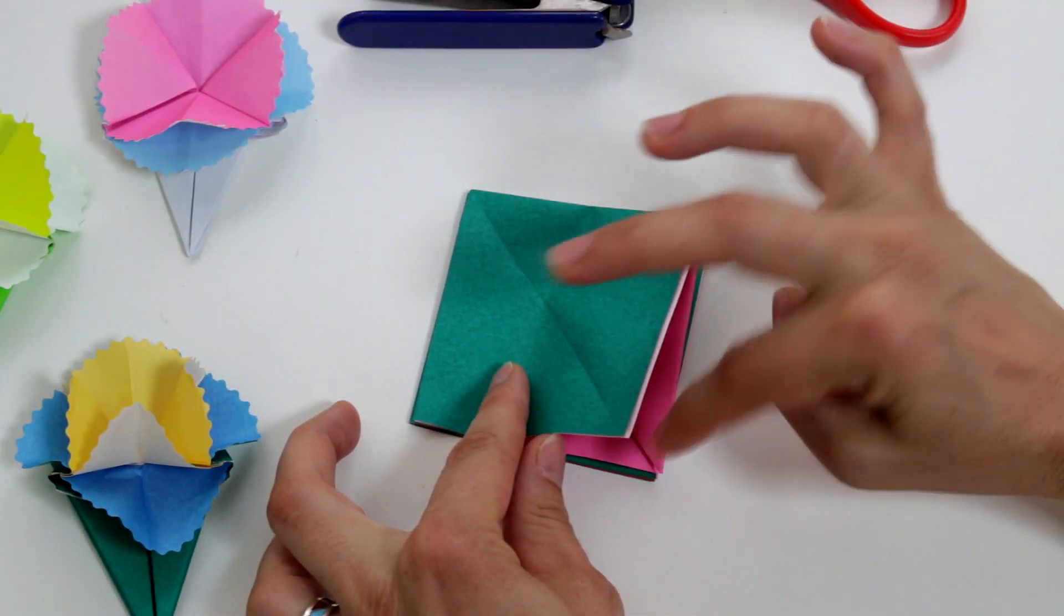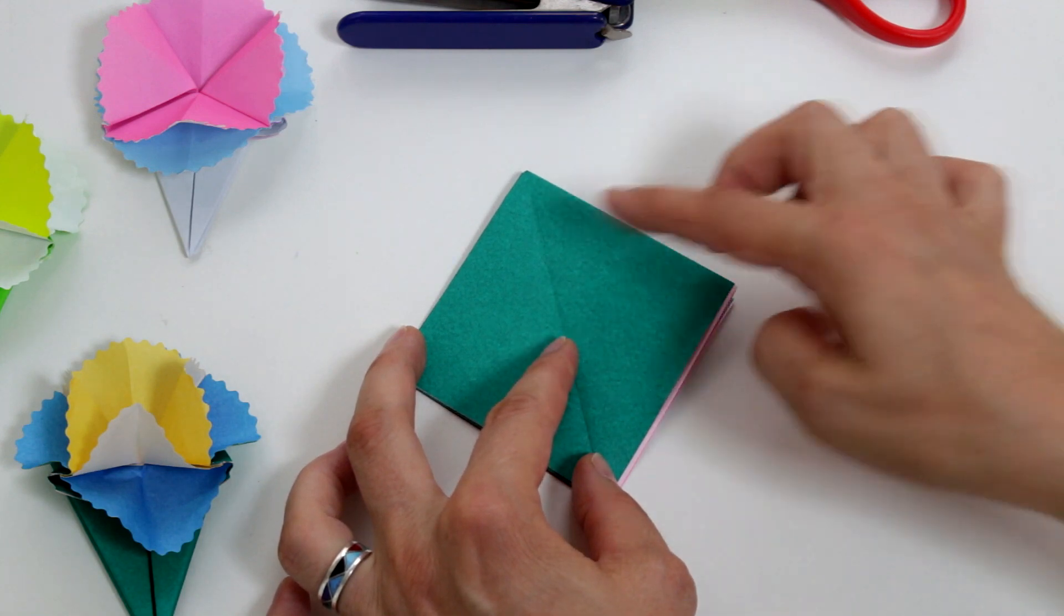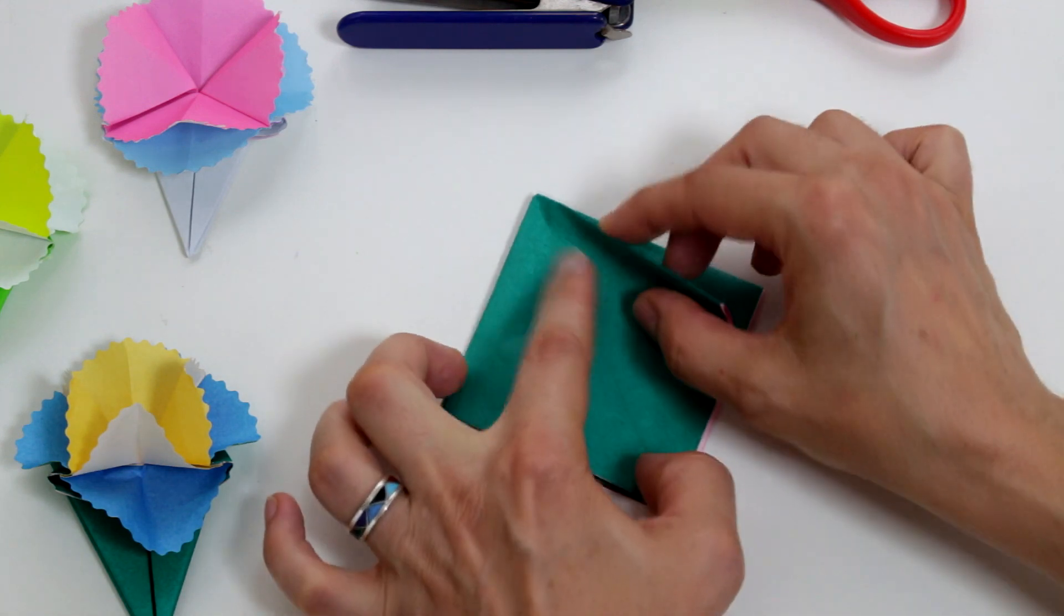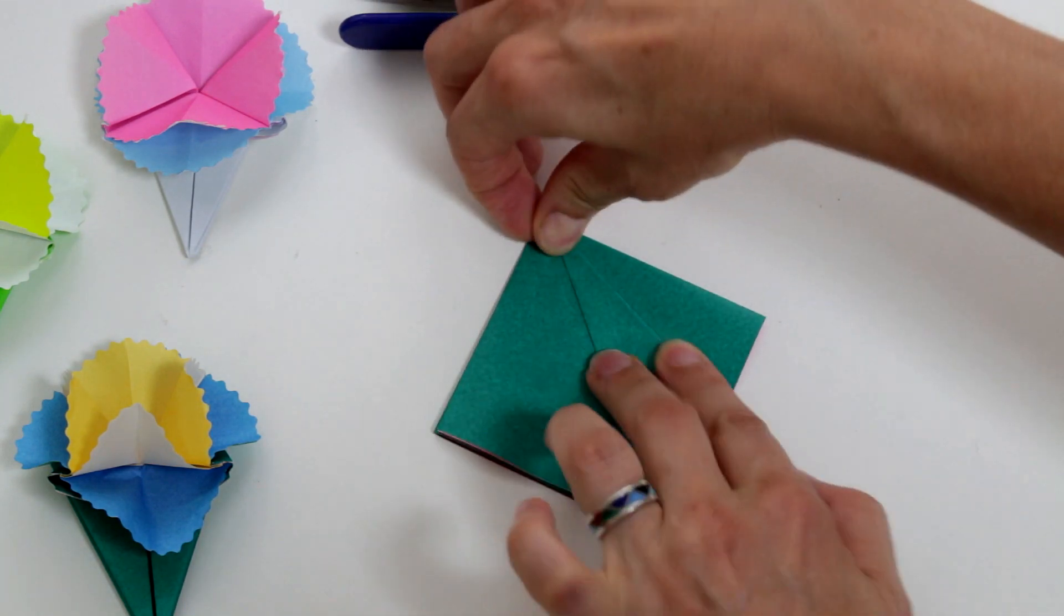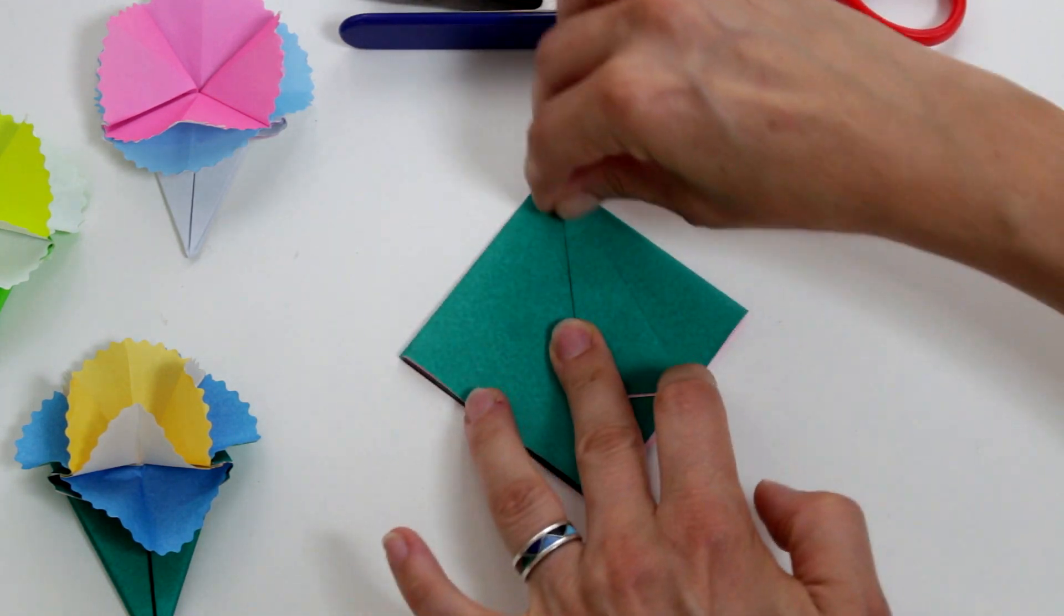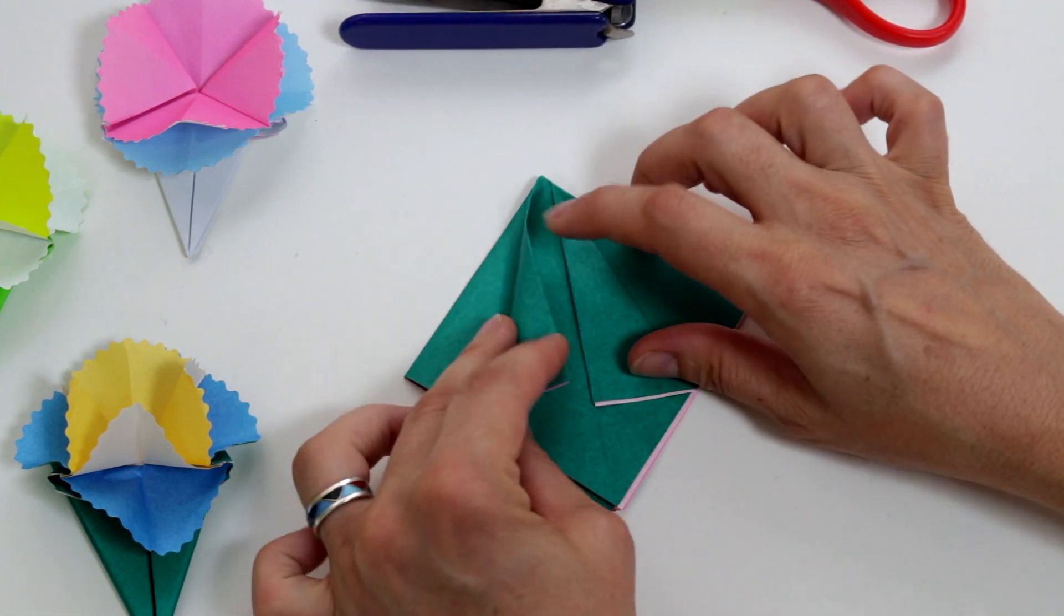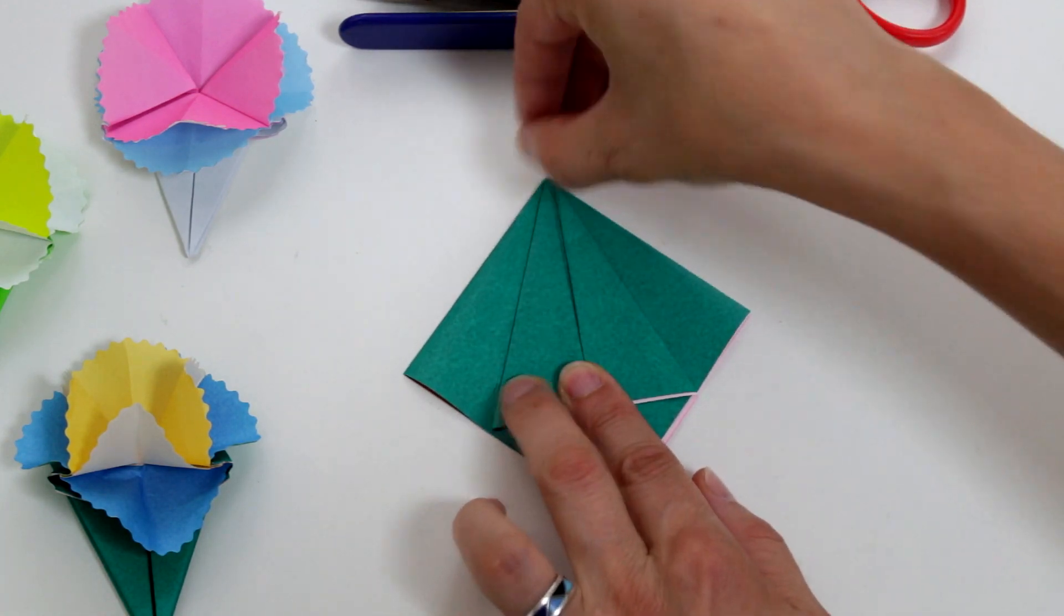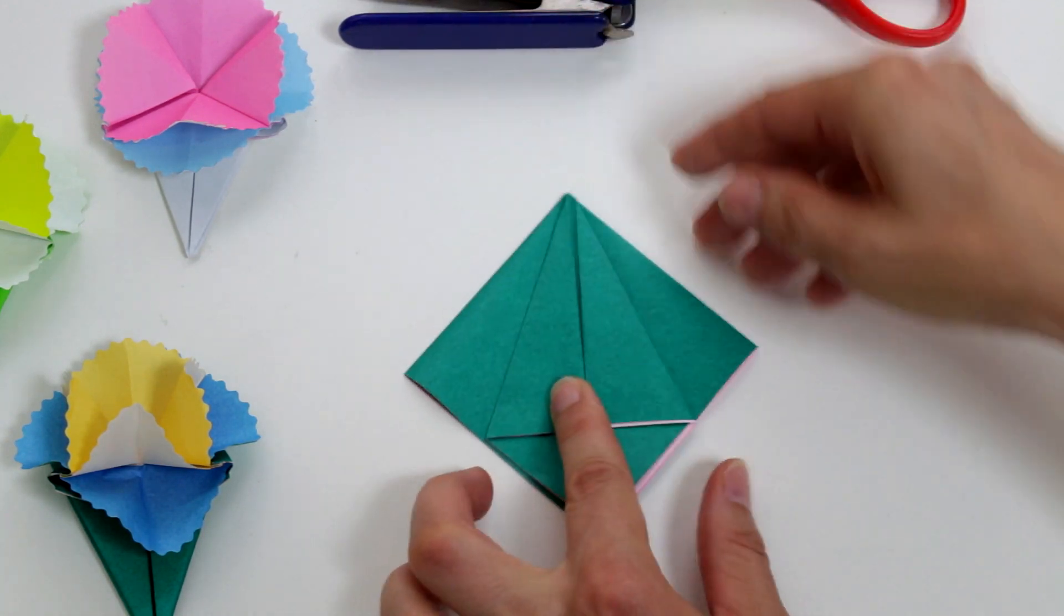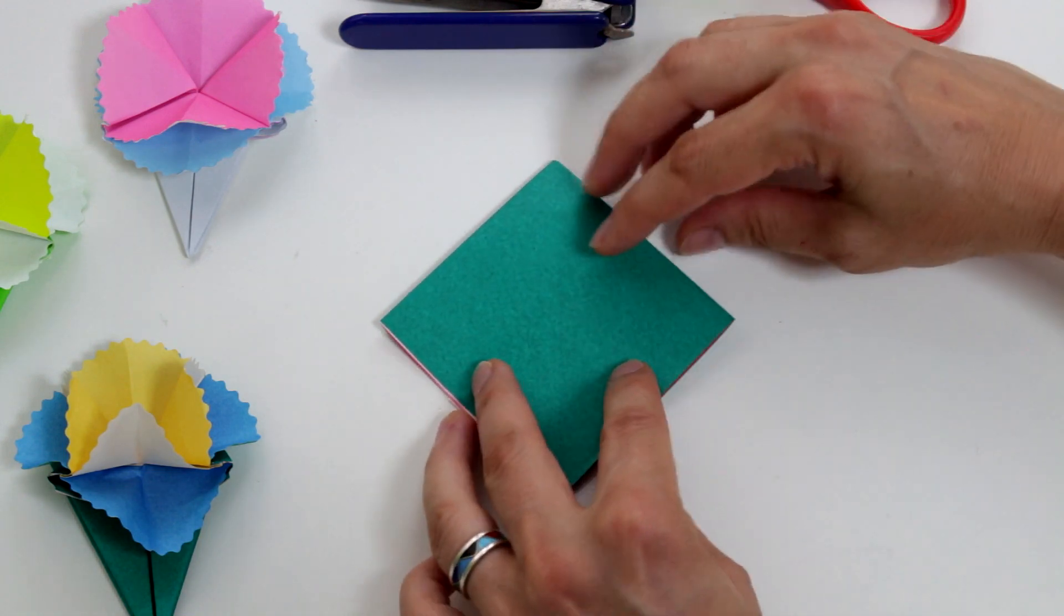So keep the open end towards you and fold the flap, the four flaps, to the middle line and crease really well, and then the other flap and crease again. Then turn the model over and do the same for the other two flaps.